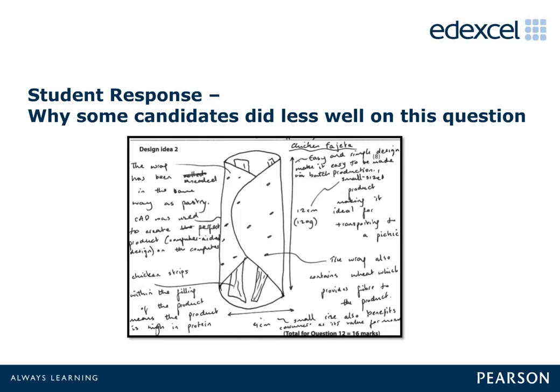This was a popular question and the majority of candidates responded fully. Some of the designs were very good, being fully annotated and sketched well. There seemed to be a logical process where the candidate worked through the specification points one by one. The point that caused greatest difficulty was regarding value for money. Responses needed to focus on ways this can be achieved — correct answers could have referenced that the food product contained ingredients that were home grown, seasonal or batch produced to reduce manufacturing costs.